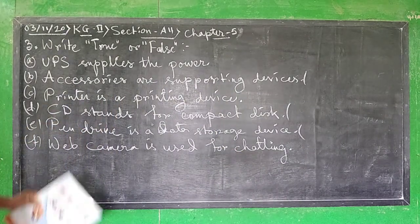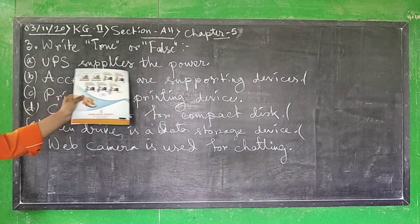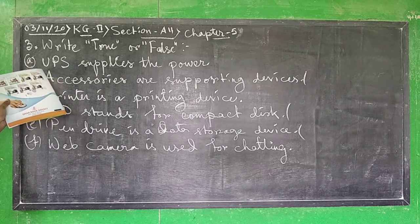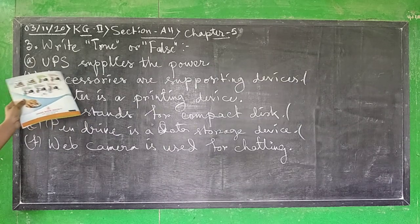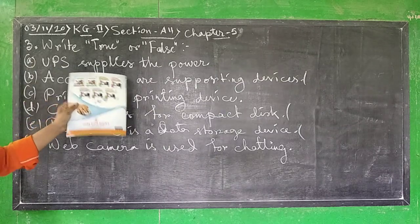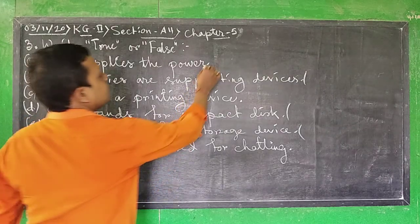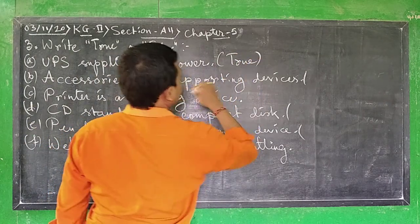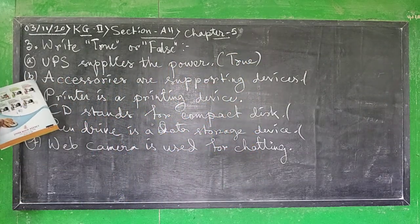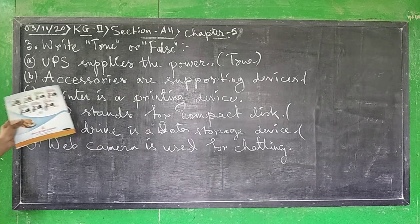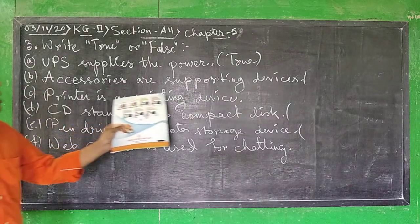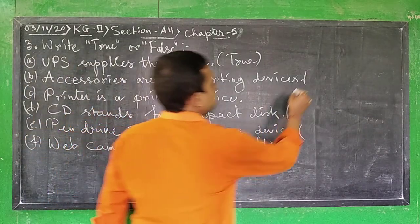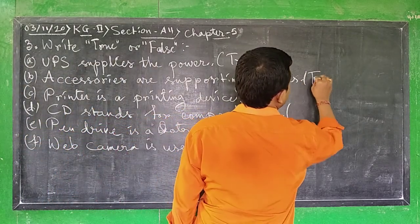Now reviewing the answers. Number 1: UPS supplies the power — this is a true sentence. Number B: Accessories are the supporting devices — this is also a true statement.